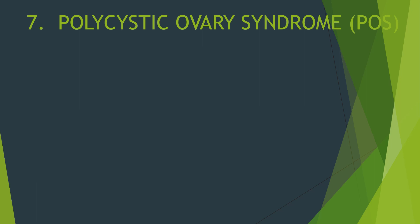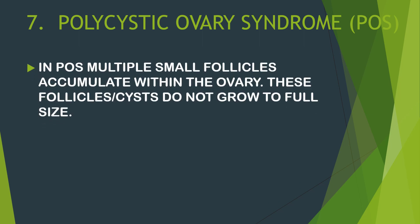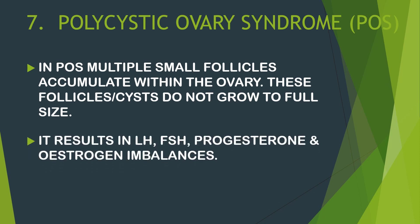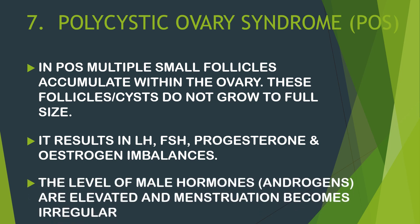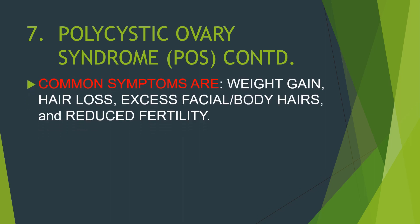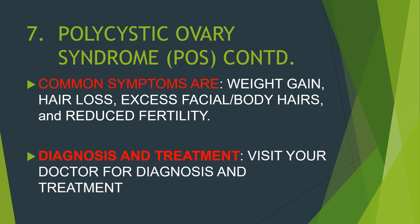Polycystic ovary syndrome (PCOS) is another cause of irregular menstruation. In PCOS, multiple small follicles accumulate within the ovary and do not develop to full size. This results in imbalances of luteinizing hormone, follicle-stimulating hormone, progesterone, and estrogen. Levels of male hormones (androgens) are elevated, making menstruation irregular. Common symptoms include weight gain, hair loss, excessive facial or body hair, and reduced fertility. Visit your doctor for proper diagnosis and treatment.